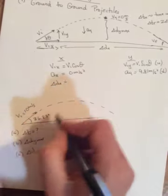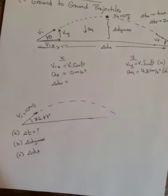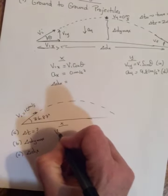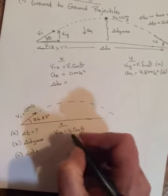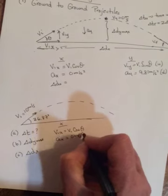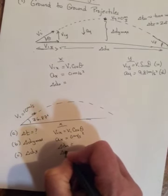So all we're given is just the angle and the VI. And you might think, man, I don't have enough info. So in the X direction, VIX is VI cos theta. So we have this value. We can get it. AX is zero. And we want delta DX. And we need delta T.